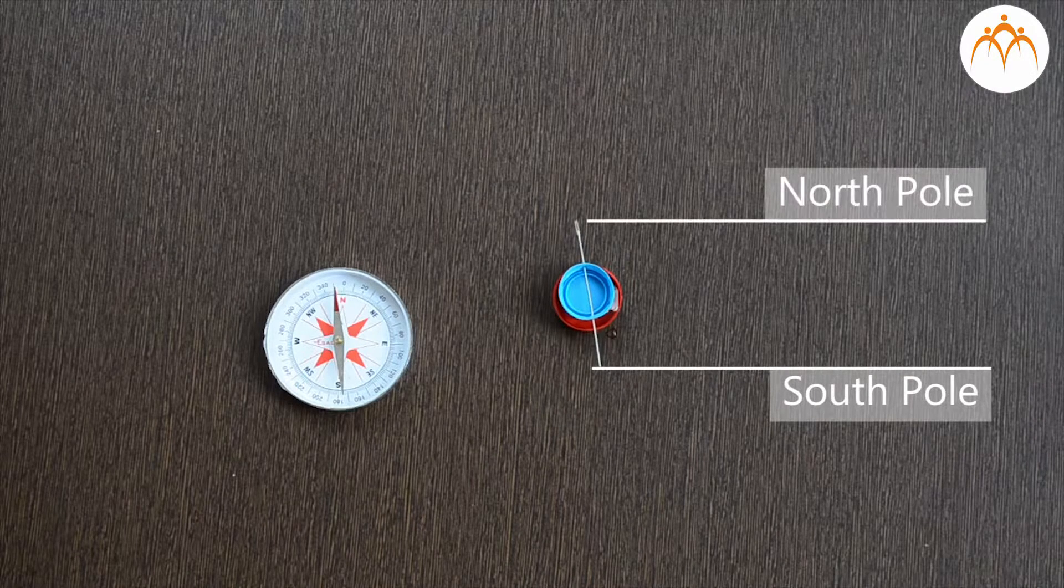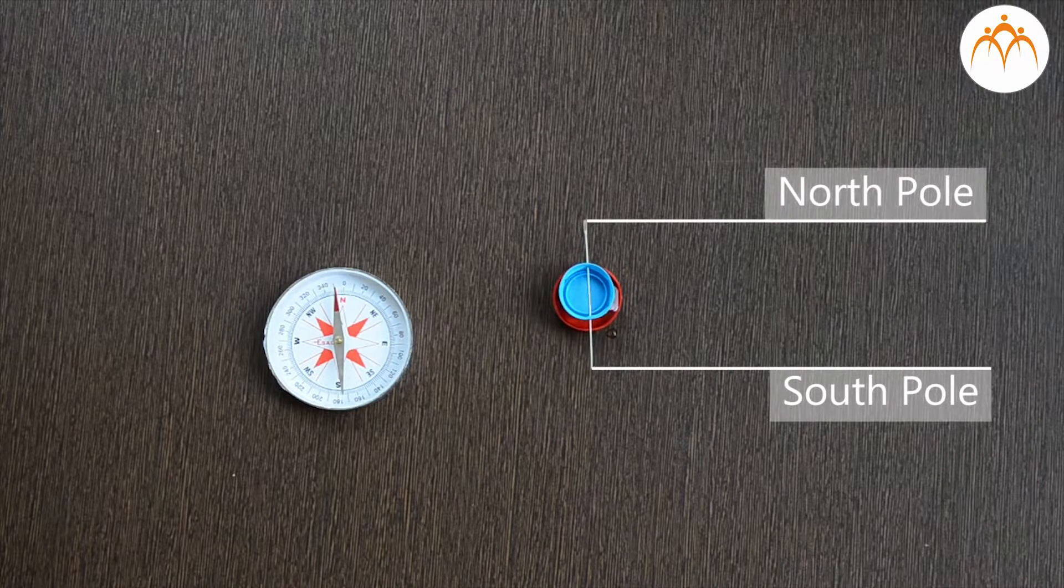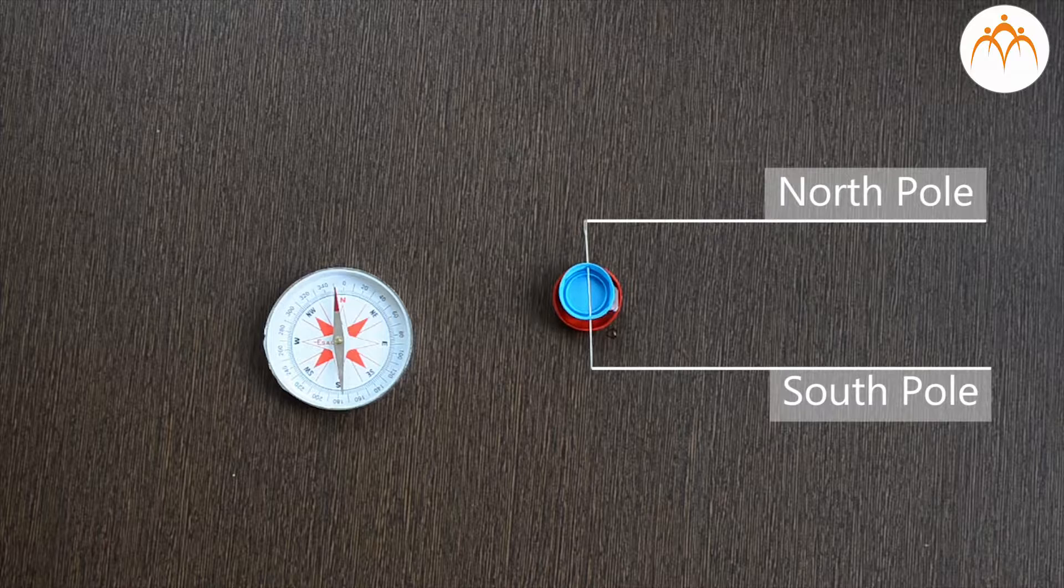Then it aligns itself in the north-south direction. This pointed end of the needle is the south pole and the eye of the needle is north. Place this container at various locations and verify the direction yourself.